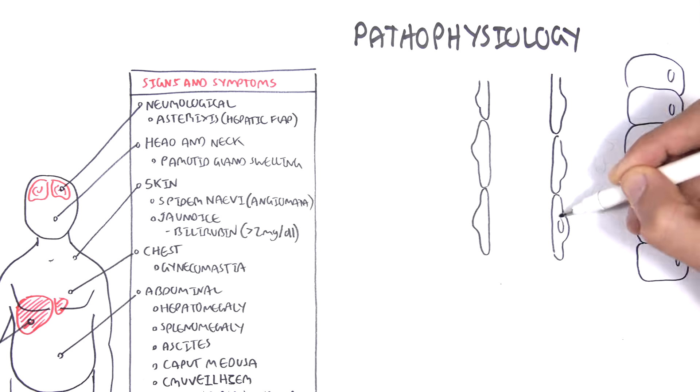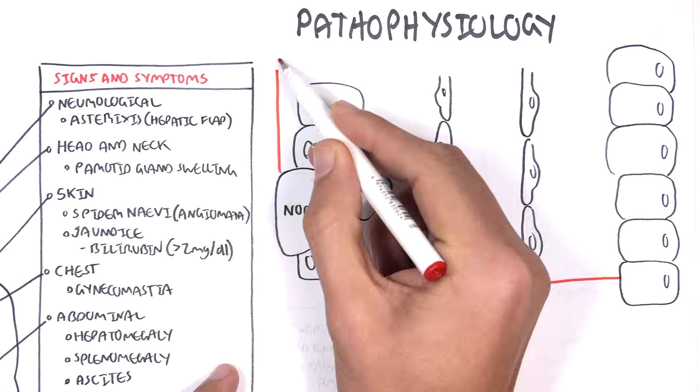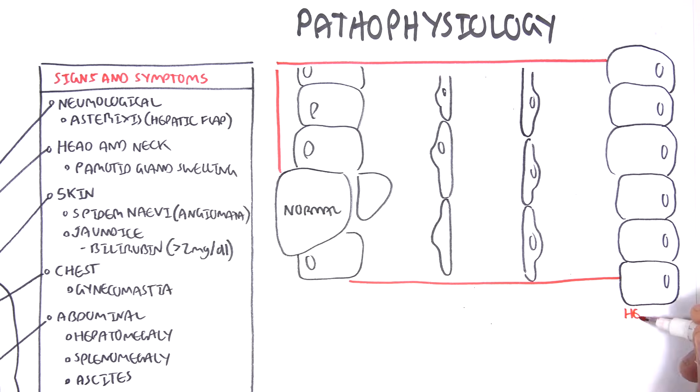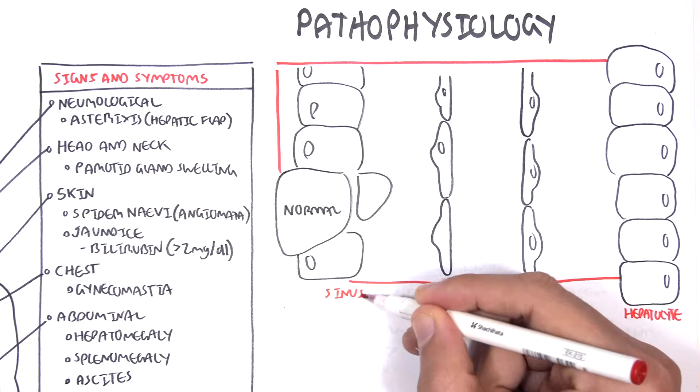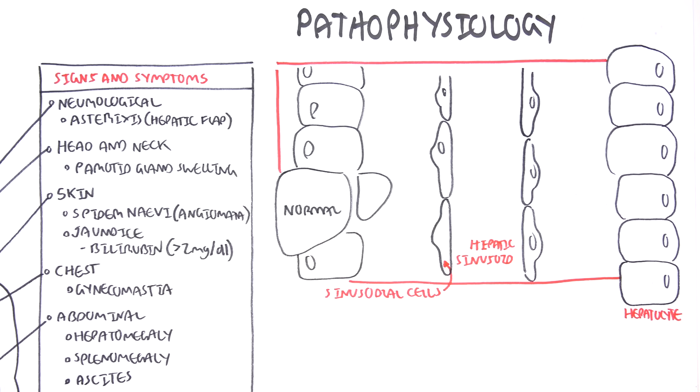Here are your liver cells and blood vessel. Here is your liver, which I'm representing to be normal. Here are your hepatocytes. These are your sinusoidal cells. This is your hepatic sinusoid, which is essentially where the portal vein drains into. The portal vein will pass through and form the central vein.